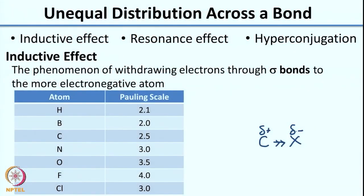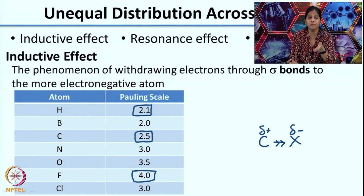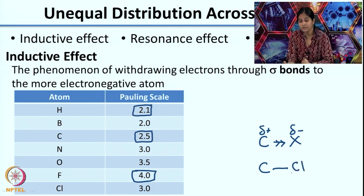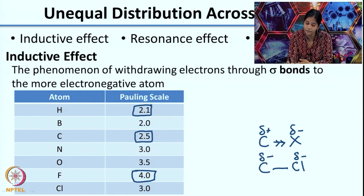The most electronegative atom is fluorine, with the greatest electronegativity value of 4 on the Pauling scale. Carbon has a lower electronegativity of 2.5, and hydrogen has an even lower value of 2.1. So if you imagine a bond where carbon is attached to fluorine or chlorine, because chlorine/fluorine is more electronegative, you get delta minus on Cl and delta plus on carbon. It is not important to memorize all these numbers, but you need to remember which atom is more electronegative.